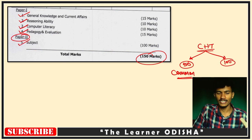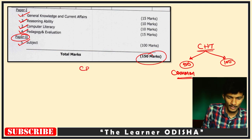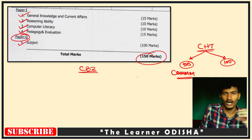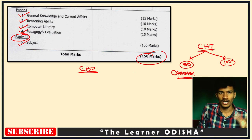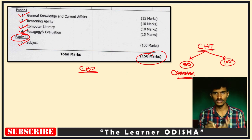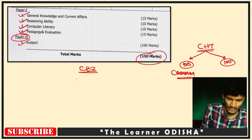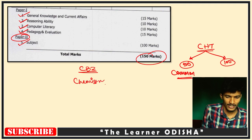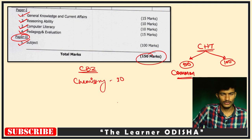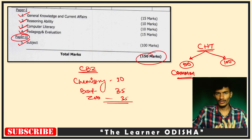Paper 2 covers the subject area content. For example, if you belong to CBZ graduation — Biology or Chemistry — then chemistry will be the subject area. That subject area paper carries 100 marks, with chemistry being 30 marks and botany being 30 marks within those 100 marks.